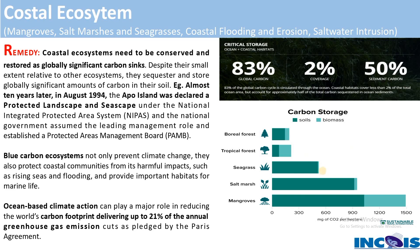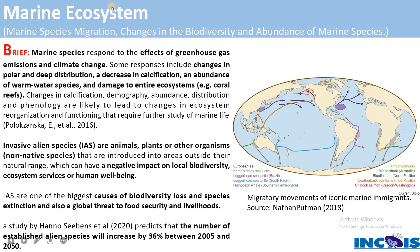Carbon storage capacity varies across ecosystem types: boreal forests, tropical forests, seagrass, salt marshes, and mangroves. Mangroves store a very large amount — around 900 milligrams of carbon dioxide per hectare — making them critically important for storing both carbon and biomass. Marine ecosystems encompass the species, plants, animals, and biodiversity found not only along the coast but throughout the entire ocean.